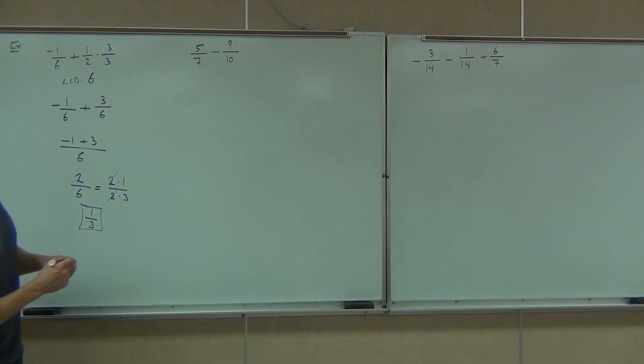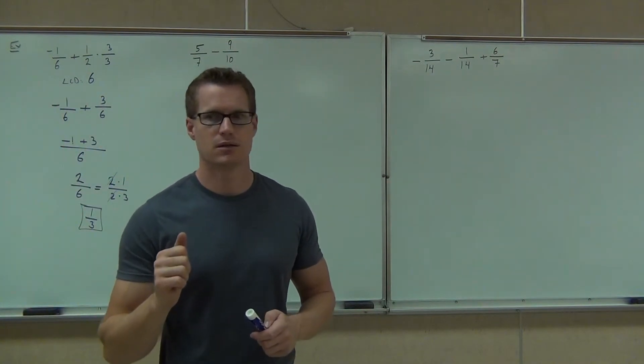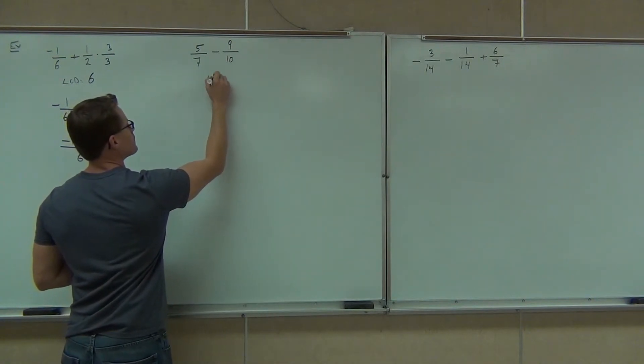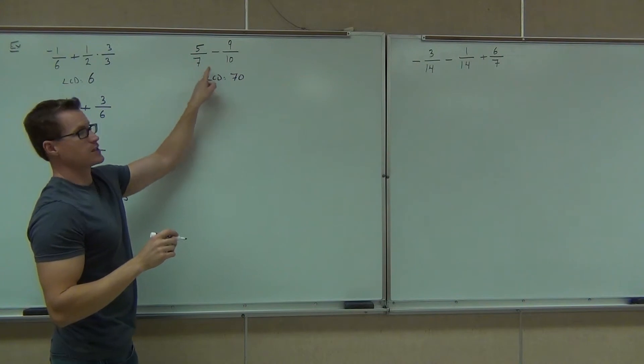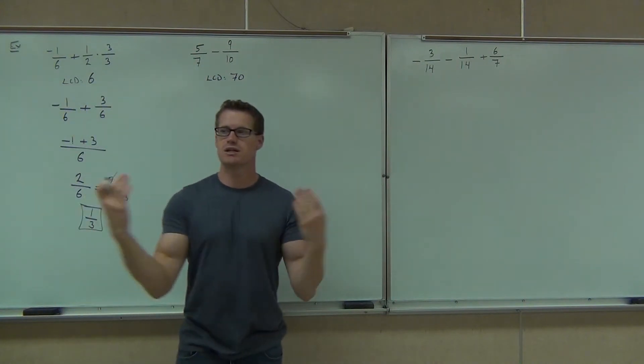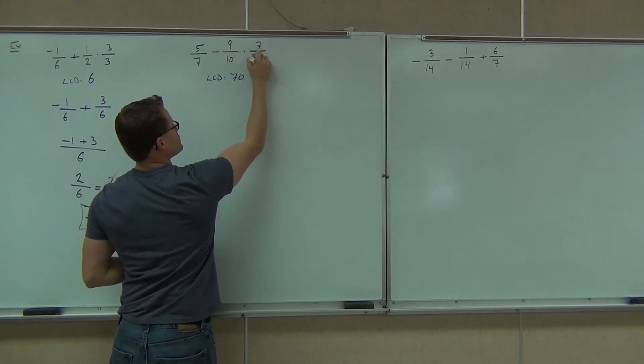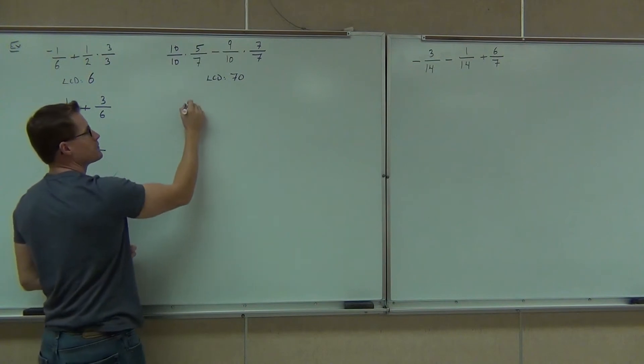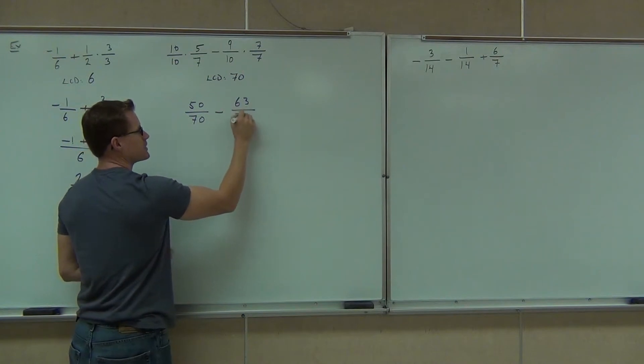Okay, next one. So we have 5 sevenths minus 9 tenths, we need an LCD. Did you find your LCD? 70. That's right. This time they have no common factors. If they don't have any common factors, you know your LCD is going to be the product of those two numbers.